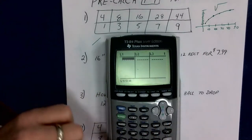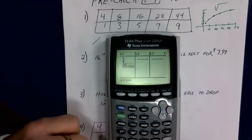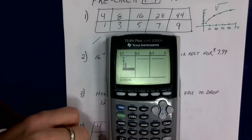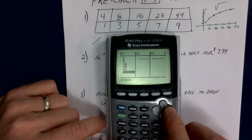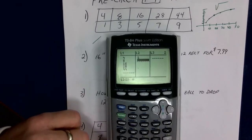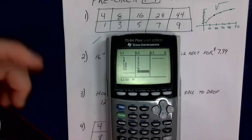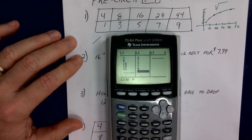So here we go: 4, 8, 16, 28, 44 for the x-values. Then 1, 3, 5, 7, 9 for the y-values. And you guys need to be trying these while we're doing this.